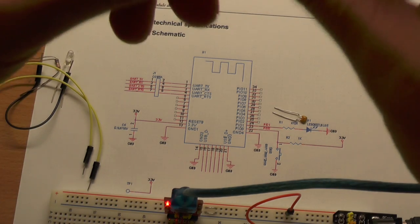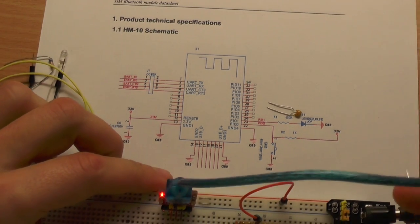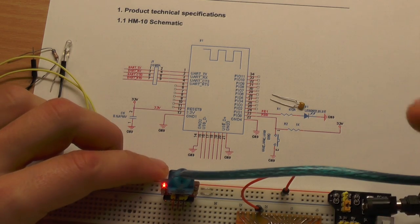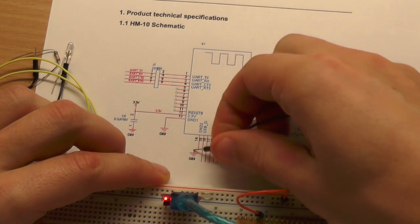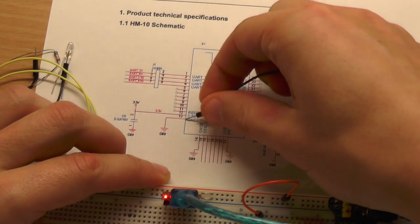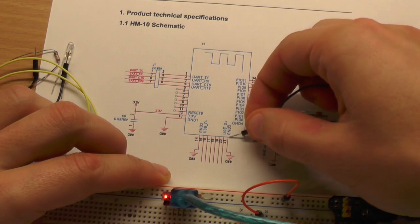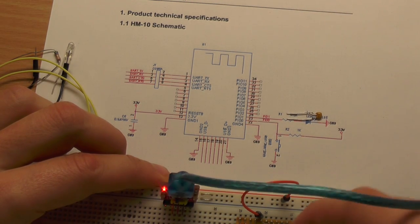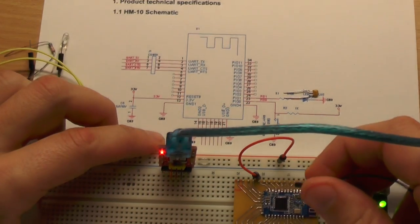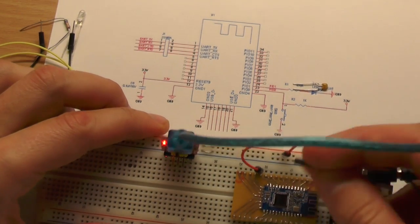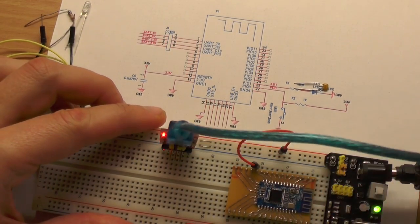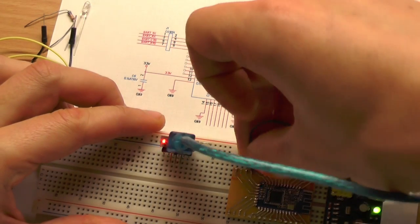We have to connect the ground line. We have connected all the ground connections together in our footprint here, in our breakout design here, so we can just take this one and just give it ground.